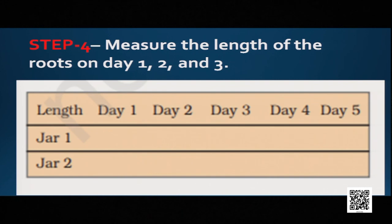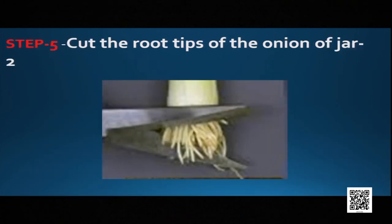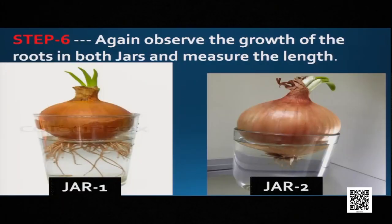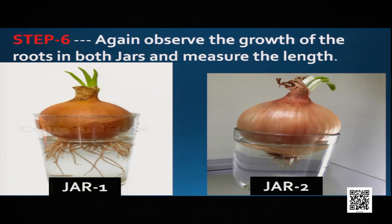In step four, maintain a record — measure the length of the onion root on day one, day two, day three, day four, and so on. In step five, cut the root tip of the onion root of jar two only, not jar one. Only the tip should be cut, not all the roots. Then place them back in their respective jars, observe the growth, and measure the length as shown in the picture.